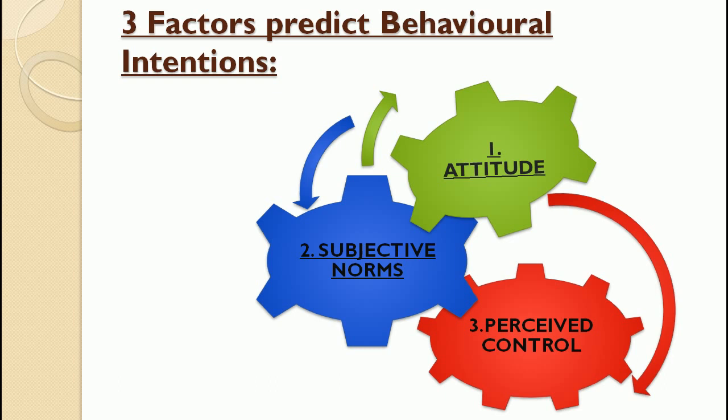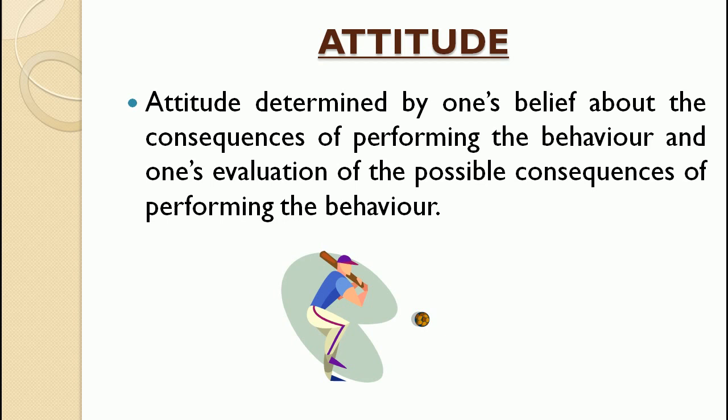Now we will discuss these factors in detail. First of all, we will talk about attitude as a factor. Attitude is determined by one's belief about the consequences of performing a behavior and one's evaluation of the possible consequences of performing that behavior. So attitude involves both our belief about consequences as well as the evaluation of those consequences. This is a little complicated, so we will understand it with the help of an example.